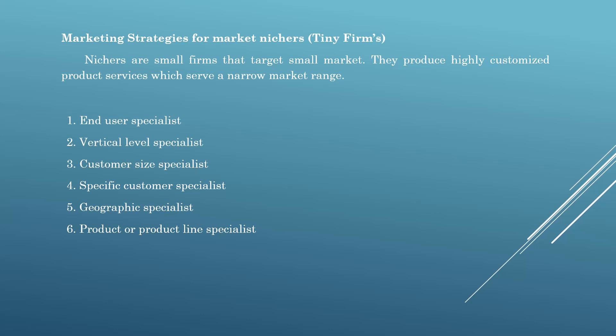Then, product or product line specialist — it means the firm produces or sells only one product or product line. For example, it sells only ties, tie pins, socks, handgloves, etc. Similarly, a small finance company deals with only car loans or personal loans — this is the product line specialist.